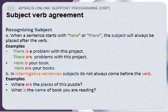Recognizing the subject: when a sentence starts with here or there, the subject will always be placed after the verb. For example: there is a problem with this project; there are problems with this project; here is your book; here are your books. In interrogative sentences, subjects do not always come before the verb. For example: where are the pieces of this puzzle? What is the name of the book you are reading?